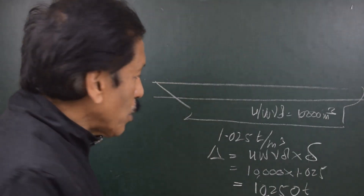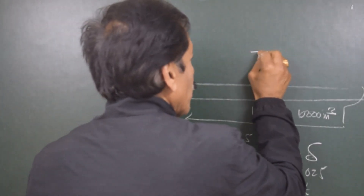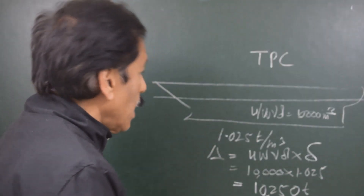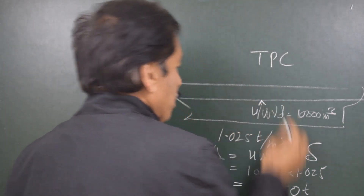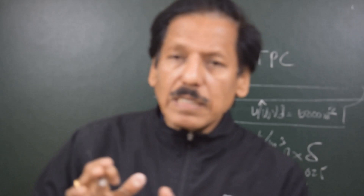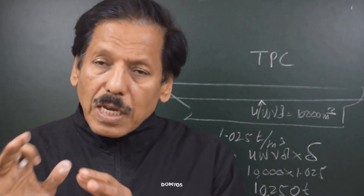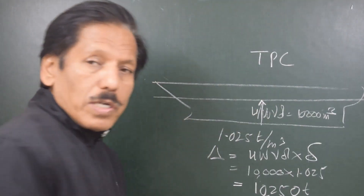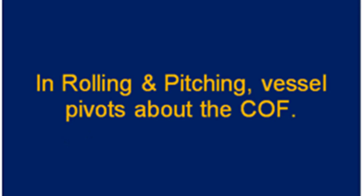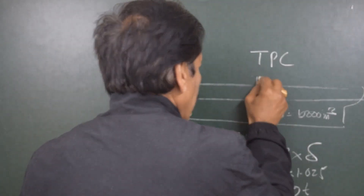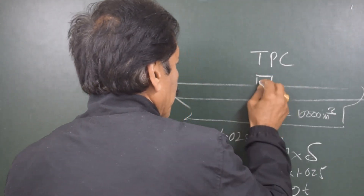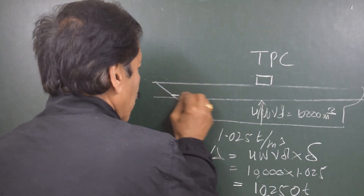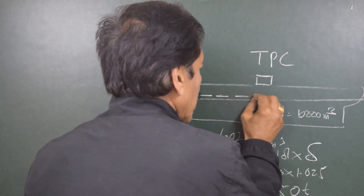Having understood displacement, now let us understand a few basic terms as we grow in stability. There is something called center of flotation — it is a point considered as the centroid of the water plane area, and also the point where you can measure the hydrostatic draft of the vessel. Let us first understand what is TPC. Let us say we place a weight on the vessel such that the draft increases by 1 centimeter.